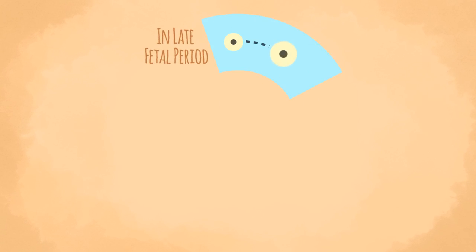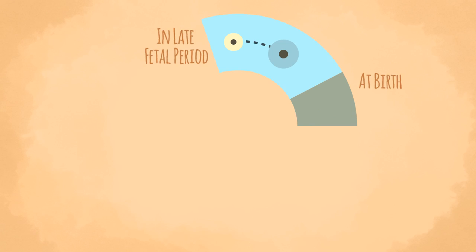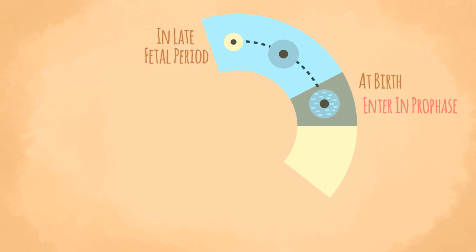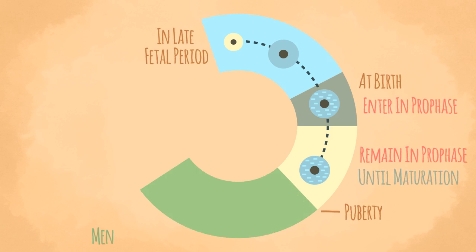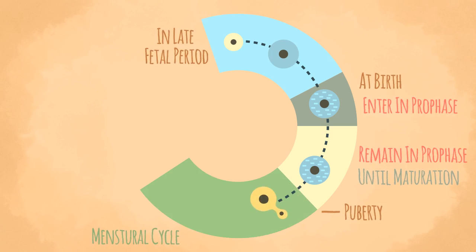In the late fetal period, primary oogonia enlarge to form primary oocytes. At the time of birth, all primary oocytes are in the prophase of the first meiotic division. These primary oocytes remain in the prophase until they begin to mature and are ready to ovulate.